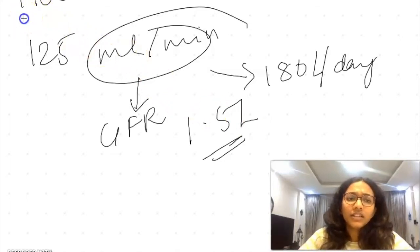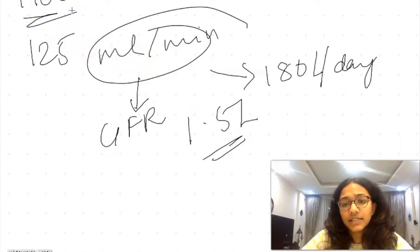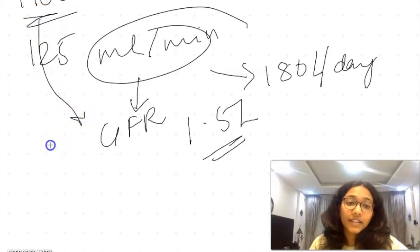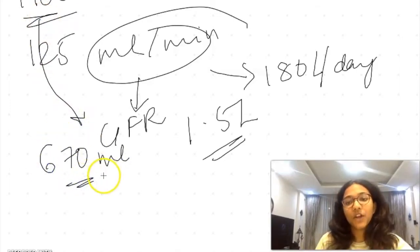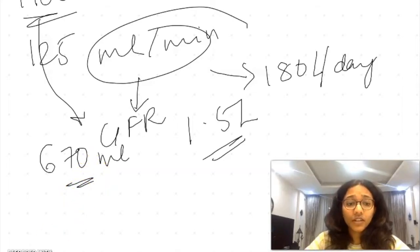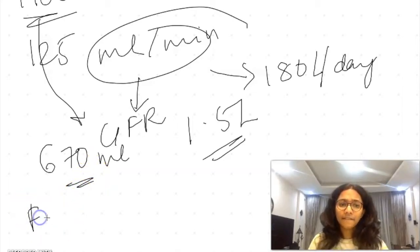Now let's discuss one more thing that is known as renal plasma flow. This much amount of blood is taken towards the kidney. In this amount of blood you have 670 ml of plasma, and this is known as renal plasma flow.